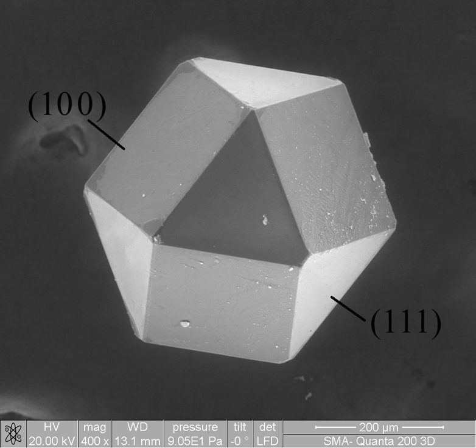Materials science is also an important part of forensic engineering and failure analysis, investigating materials, products, structures or components which fail or do not function as intended, causing personal injury or damage to property. Such investigations are key to understanding, for example, the causes of various aviation accidents and incidents.